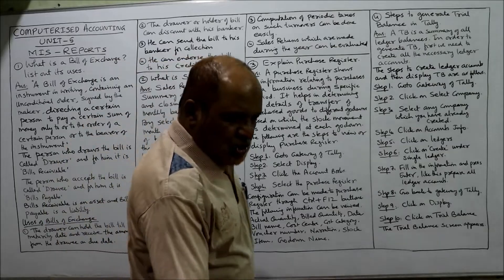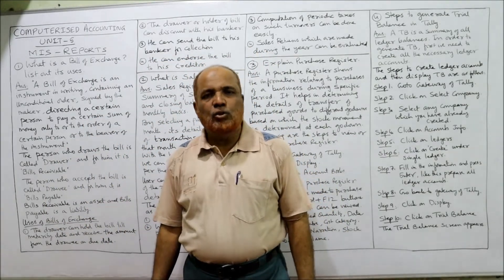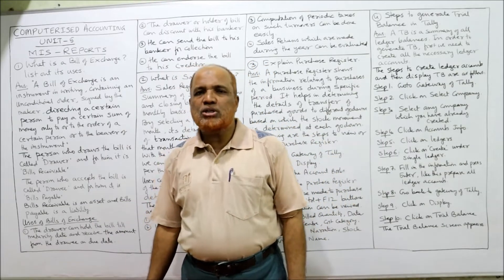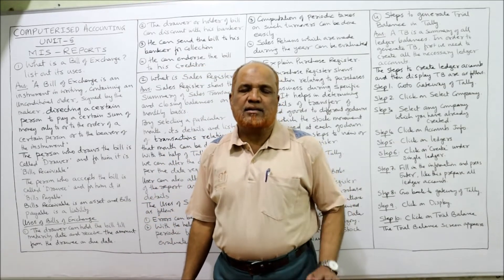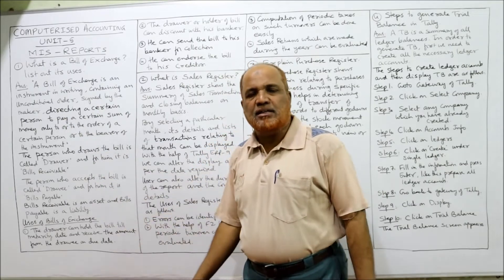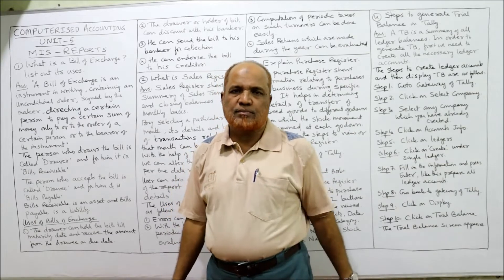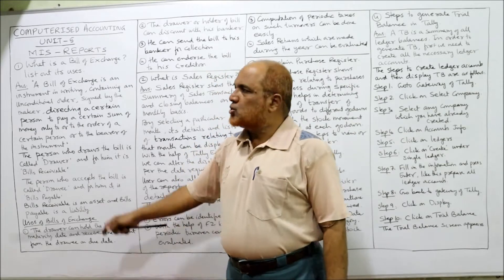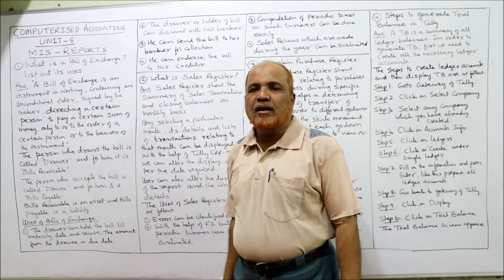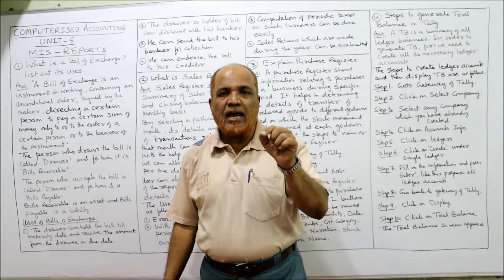The first question: what is the bill of exchange and what are its uses? According to Section 5 of the Negotiable Instrument Act, a bill of exchange is an instrument in writing — instrument means document. It is a written document, not oral.